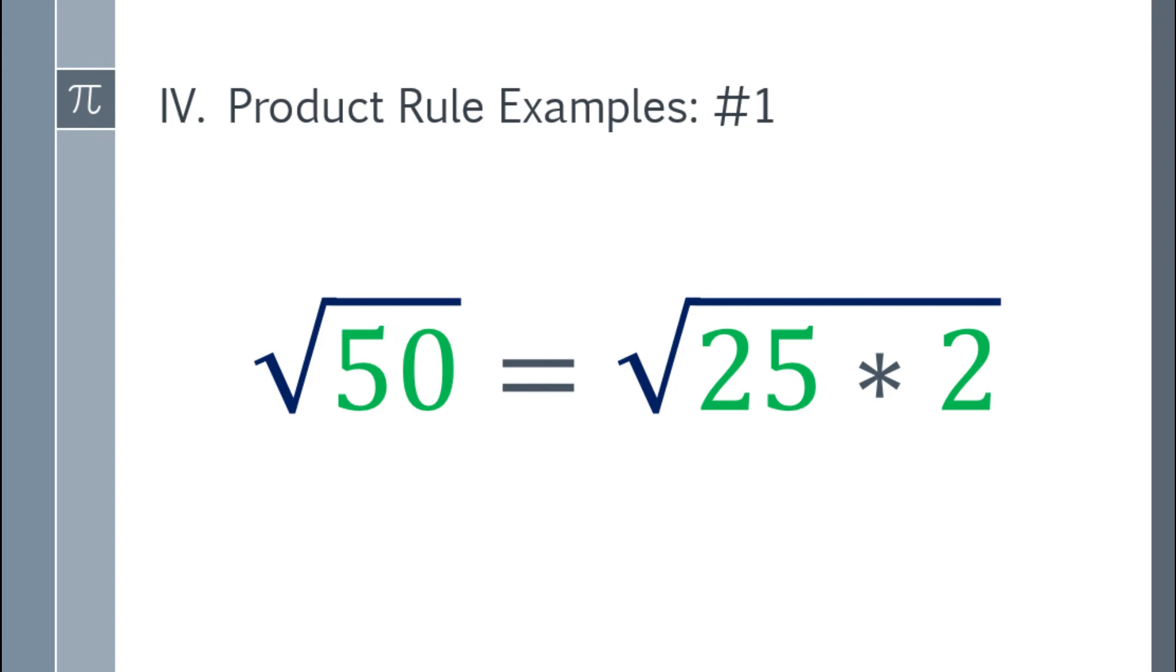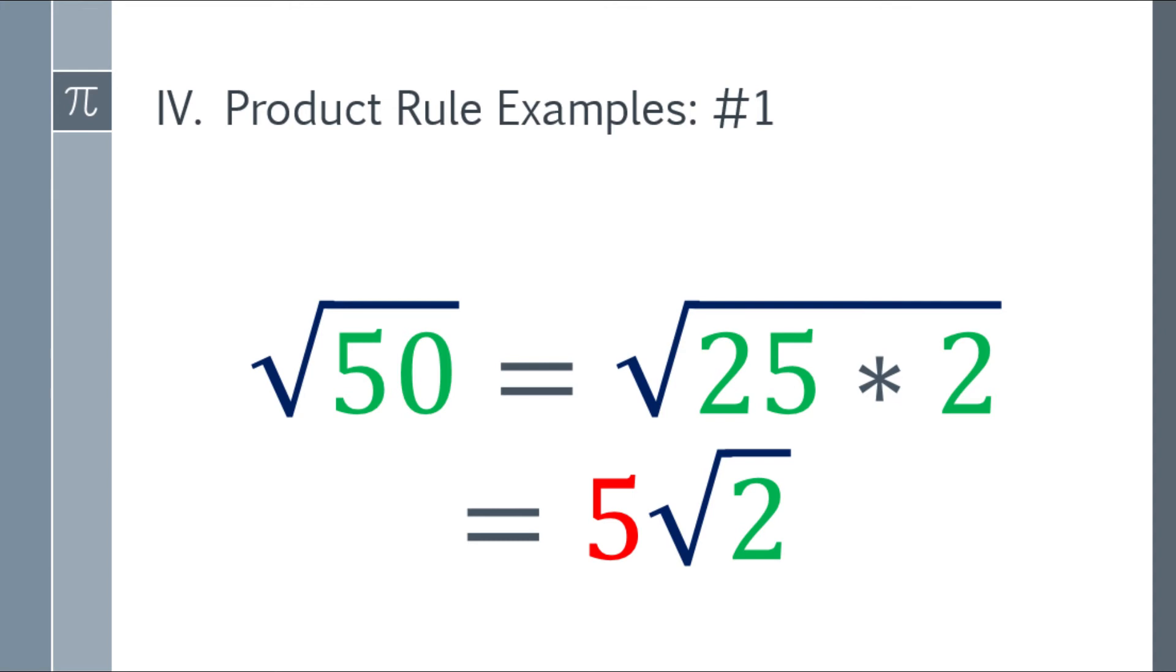So yun na. Square root of 50 is equal to the square root of 25 times 2. So yung 25, kung yun may square root na, that will be 5. And yung 2 mananatili sa loob ng radical sign.